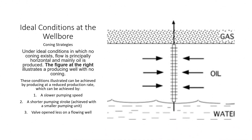Under ideal conditions in which no coning exists, flow is principally horizontal and mainly oil is produced. The figure to the right illustrates a producing well with no coning. These conditions can be achieved by producing at a reduced production rate, which can be accomplished by a slower pumping speed, a shorter pumping stroke, or a smaller pumping unit.